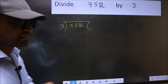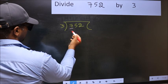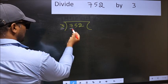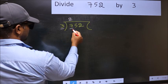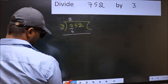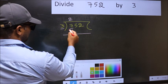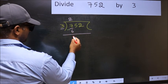Next, here we have 7 and here 3. A number close to 7 in 3 table is 3 times 2, 6. Now, you should subtract 7 minus 6, 1.